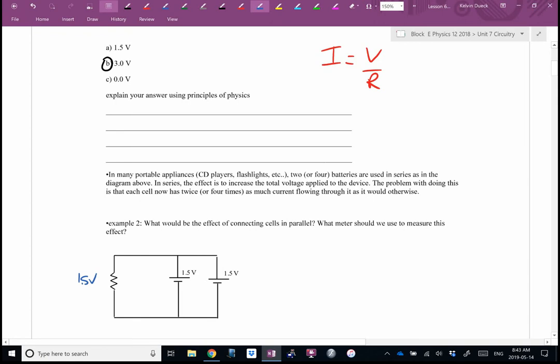So, if you connect them in parallel, you don't gain extra voltage, but the nice thing about this now is each cell is only supplying half the current. These batteries will last twice as long as normal. So, the advantage with wiring batteries in parallel, you don't have to replace them as often. The advantage with wiring batteries in series, you can get a higher voltage.